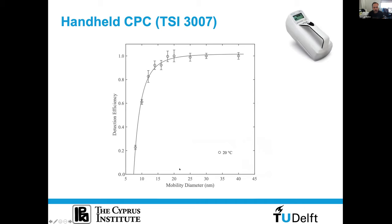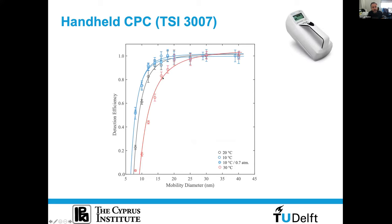These are detection efficiency curves as a function of mobility diameter from the DMA. At ambient conditions of 20°C, we get what is expected — a D50 cutoff diameter of roughly 7 to 10 nanometers. Dropping the temperature by 10°C causes a slight shift; dropping both temperature and pressure shows pressure has less effect. This is a reminder that when using these CPCs with UAVs at altitudes above a few hundred meters, you must report temperature and pressure, as these define how the detection efficiency curves change.